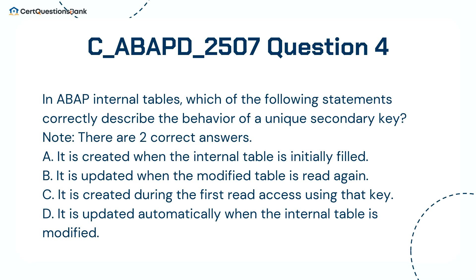In ABAP internal tables, which of the following statements correctly describe the behavior of a unique secondary key? Note, there are two correct answers. A. It is created when the internal table is initially filled. B. It is updated when the modified table is read again. C. It is created during the first read access using that key. D. It is updated automatically when the internal table is modified.